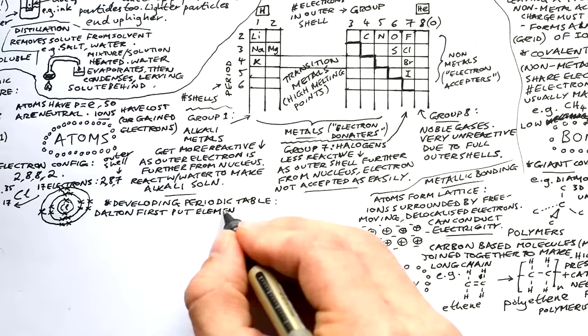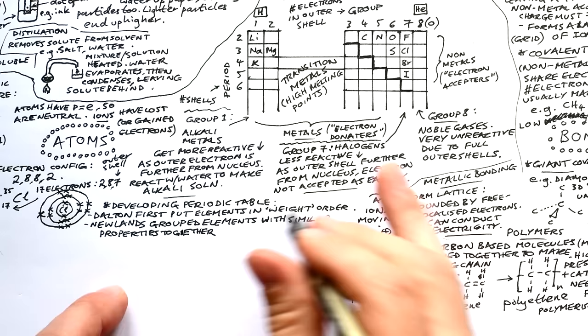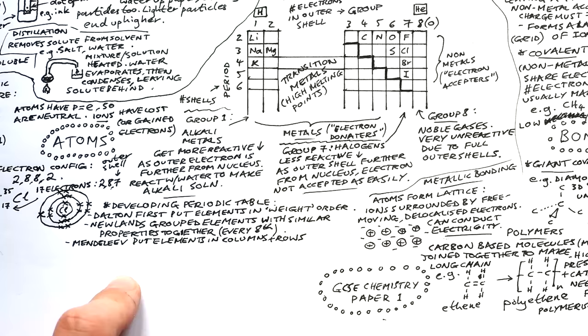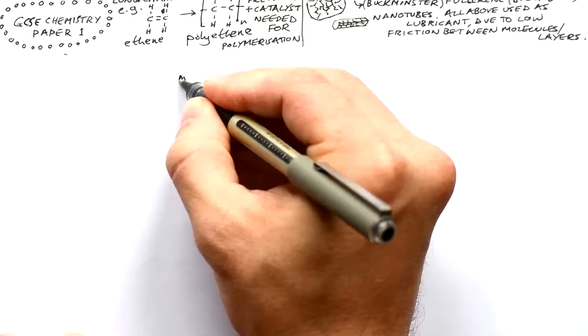The periodic table didn't come out of nowhere. John Dalton was the first to arrange elements in order of weight (not mass). Newlands then grouped elements with similar properties and found that every eighth element had similar properties. Finally, Mendeleev arranged elements in columns and rows to make what we essentially know as the periodic table today.